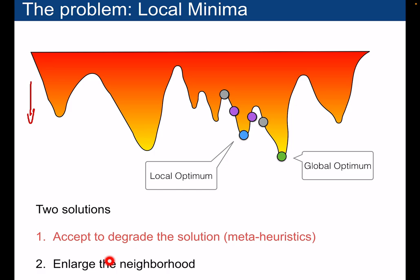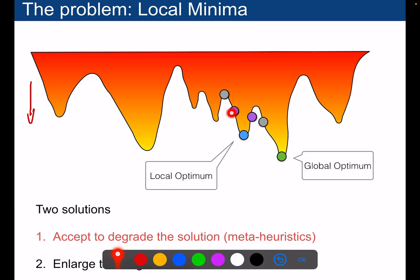Another possibility is that you might also enlarge neighborhoods, so that instead of only considering the purple points here, the two neighborhood points of this blue point, you might look a little bit further and be able, for instance, to reach that one or that one directly. So these are the two possibilities.